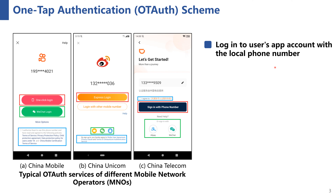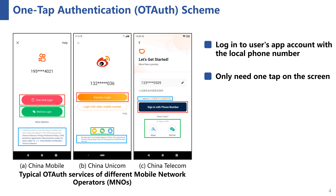For apps that have integrated this scheme, the app user can log in to her app account with the local phone number of the device. The local phone number refers to the phone number bound to the SIM card on this mobile device. As shown in these pictures, the app will display the masked local phone number as one of the login options, such as 195****4021. If the user chooses to log in by this method, she only needs to tap the button; otherwise, she can manually choose to log in by other methods, such as by invoking other apps.